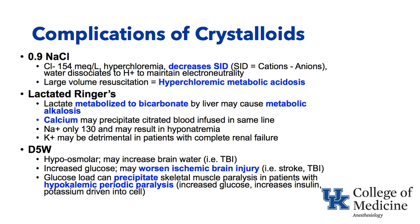Lactated Ringer's: lactate is an anion metabolized to bicarbonate by the liver, which can cause metabolic alkalosis. Acetate and citrate are also metabolized to bicarbonate. Calcium is present in lactated Ringer's and can precipitate with citrated blood if infused in the same line, so we often don't use LR to dilute packed red blood cells. The sodium in LR is only about 130 and can result in hyponatremia. LR contains potassium, so it is often avoided in patients with complete renal failure.